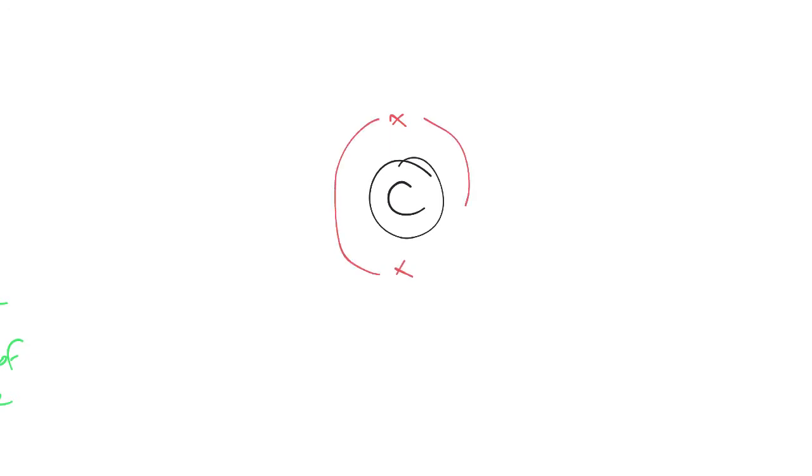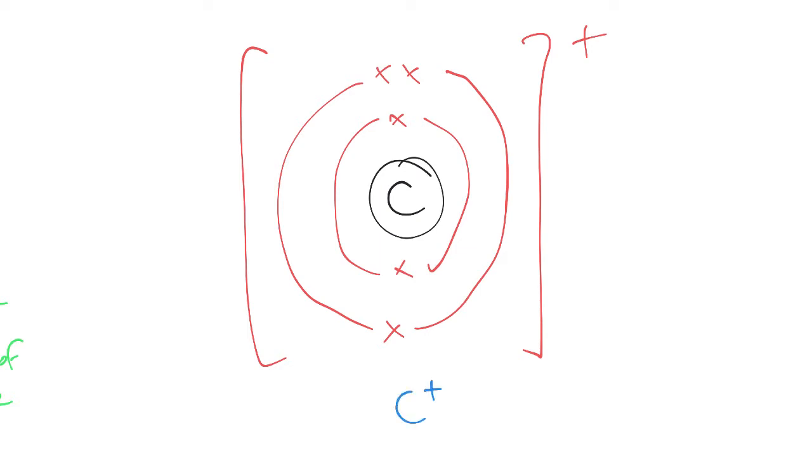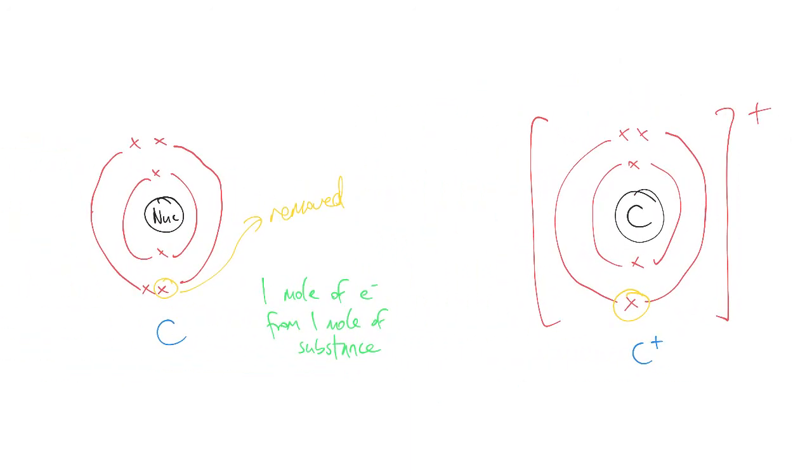But now it is also what? It is also positively charged. So it's C1+. In terms of removing this next electron, will it be easier or harder compared to that electron there? Why will it be harder? Because the electrostatic attraction is much stronger.